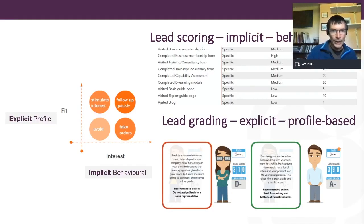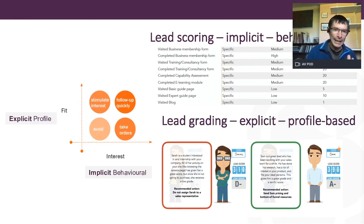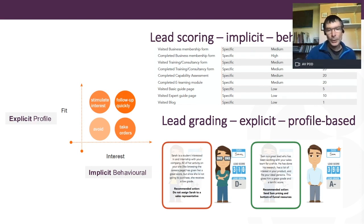Let's talk about lead scoring. This looks at the level of interest: if someone has downloaded lots of content on your website, you know they're interested and want to follow up quickly. But you also need to think about the grade. We have lots of students on Smart Insights — happy to share content — but in terms of our paid service they're less likely to invest. So you might have someone with a very good score, like Sarah at 310, but her grade of D-minus is lower compared to that of Sam.